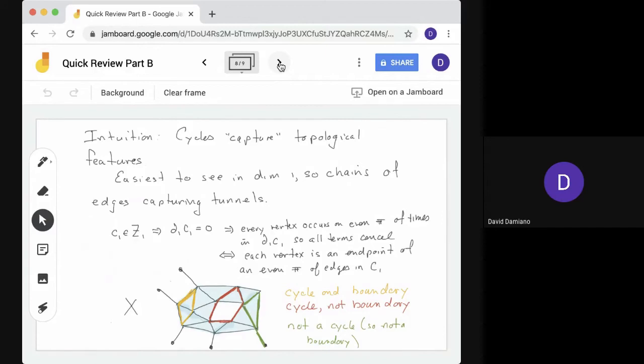So our intuition is going to be that cycles capture topological features. Here's an example that's easy to see in dimension one. In this case the chains are capturing tunnels. Here we see the simplicial complex X down below. If we look at c1 in capital Z1 that means boundary c1 equals zero. So that says every vertex occurs an even number of times in boundary 1 c1, so all the terms cancel. Well that means each vertex in c1 is an endpoint of an even number of edges. That's how we get cancellation.